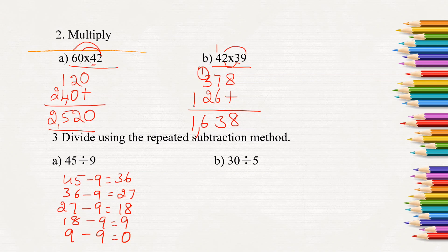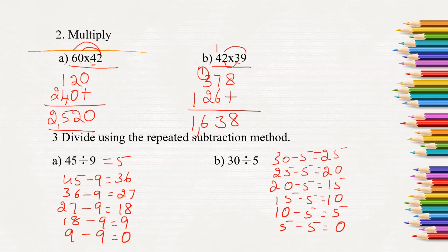Similarly, 30 minus 5 equals 25. 25 minus 5 equals 20. 20 minus 5 equals 15. 15 minus 5 equals 10. 10 minus 5 equals 5. 5 minus 5 equals 0. So how many times we subtracted here, 1, 2, 3, 4, 5, 6. So 30 divided by 5 equals 6.